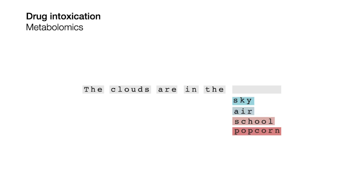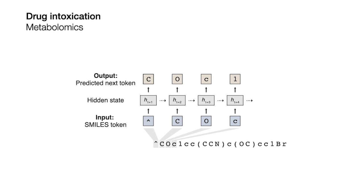For example, a good language model should learn that a sentence starting with 'the clouds are in the' is relatively likely to end with a word like 'sky' or perhaps 'air,' and much less likely to end with a word like 'school' or 'popcorn.' We thought that instead of training a neural network to predict the next word in a sentence, we could train the exact same model to predict the next character in a SMILES string, and then sample from the trained model to generate new molecules one character at a time.